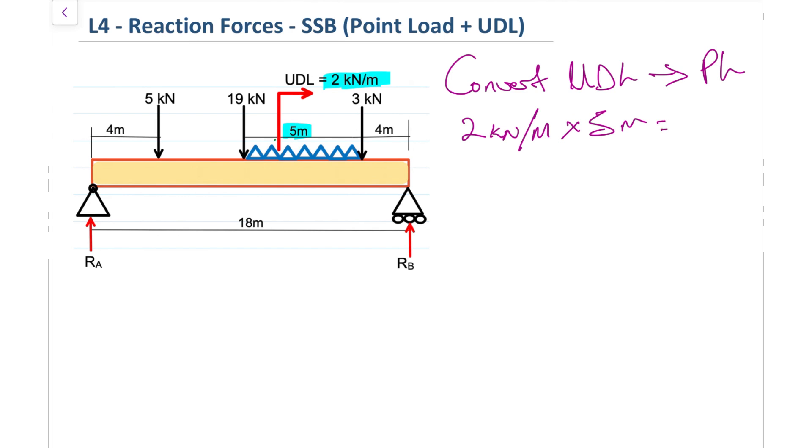Where we place that 10 kilonewtons is going to be right in the middle of that 5 meters. I'm going to place that right here, and you can see that green highlight that I'm using. That's exactly where that 10 kilonewtons will be going. So that's the UDL being converted into a point load.